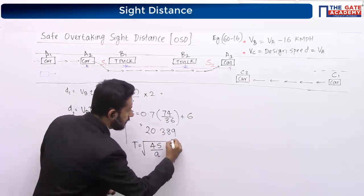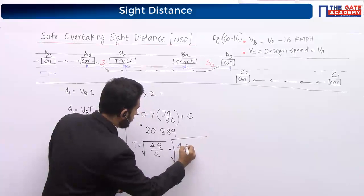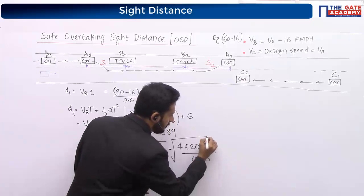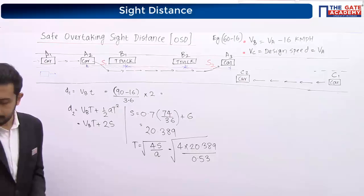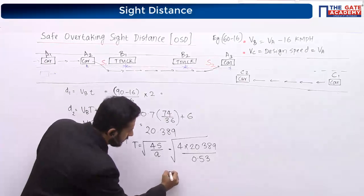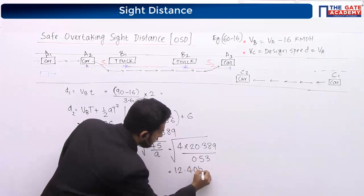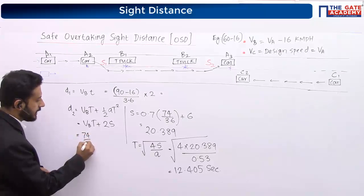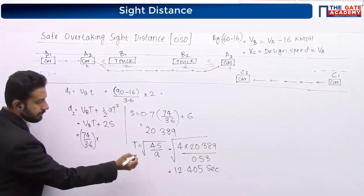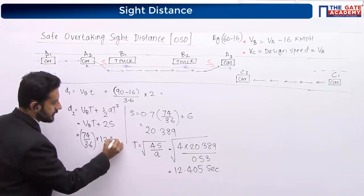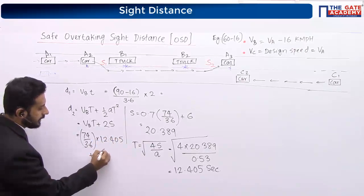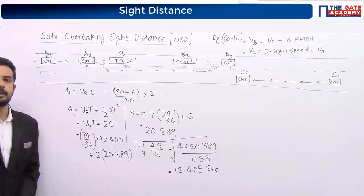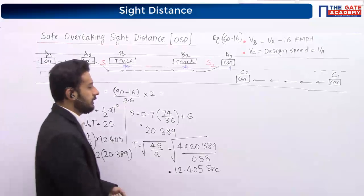How much will T be? Root of 4 into 20.389 divided by the given acceleration 0.53. So if you calculate, you get T = 12.405 seconds. So directly substitute: 74 by 3.6 multiplied by 12.405, plus 2 times S which is 20.389. So you can calculate D2. Now what will be D3?